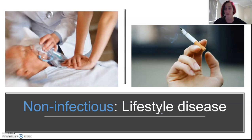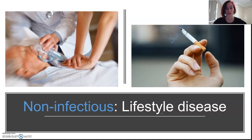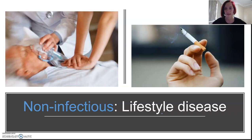Biozone notes that lifestyle diseases are diseases of affluence, as opposed to diseases of poverty — because we have the ability to include these things in our life as a result of being quite well-off, we get things like heart disease.